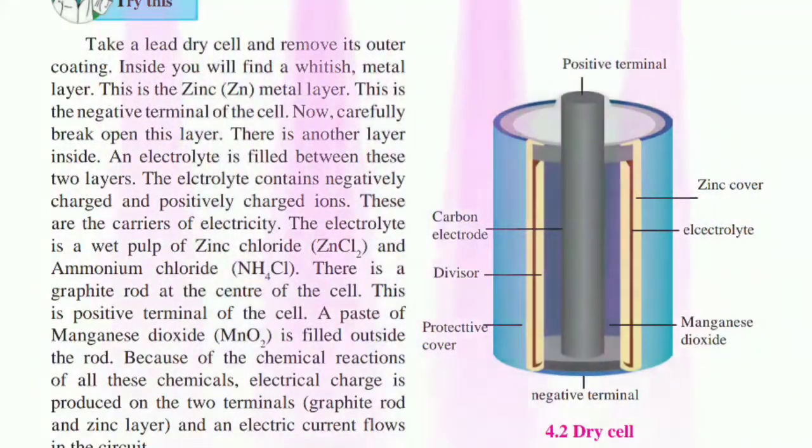Because of the chemical reactions of all these chemicals, electrical charge is produced on the two terminals. That is graphite rod and zinc rod. And an electric current flows in the circuit. Due to the wet pulp used in this cell, the chemical reactions proceed very slowly. Hence a large electric current cannot be obtained from this.